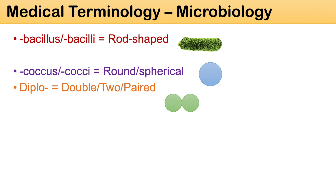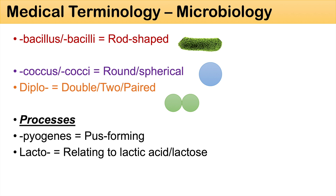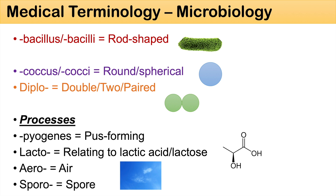Some bacteria are described by the process they perform or their metabolism. The suffix pyogenes means pus forming — pyo means pus, genes means forming or initiating. You can think of streptococcus pyogenes. The prefix lacto relates to lactic acid or lactose, meaning the bacteria metabolize or produce it. Other processes include the prefix aero, which relates to air, and sporo, which relates to spore formation.